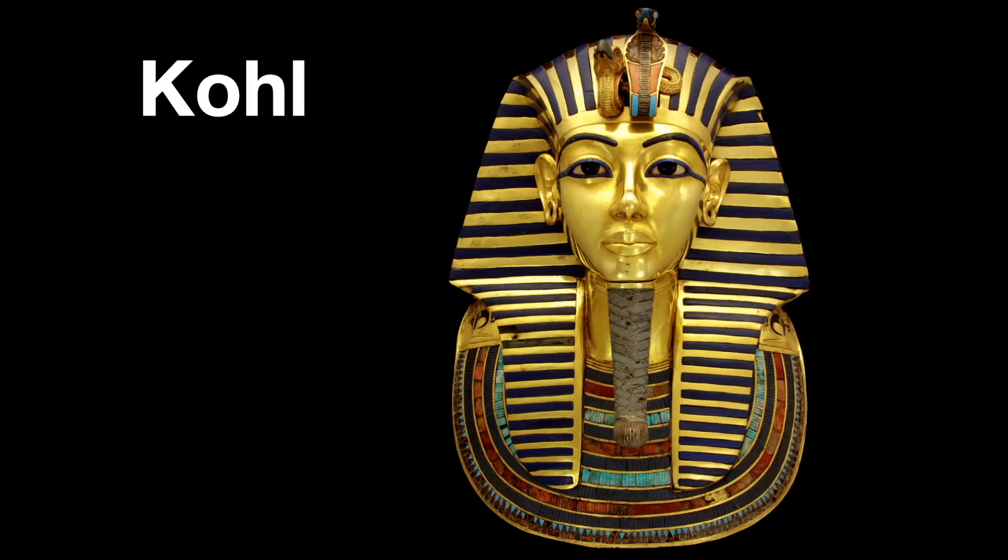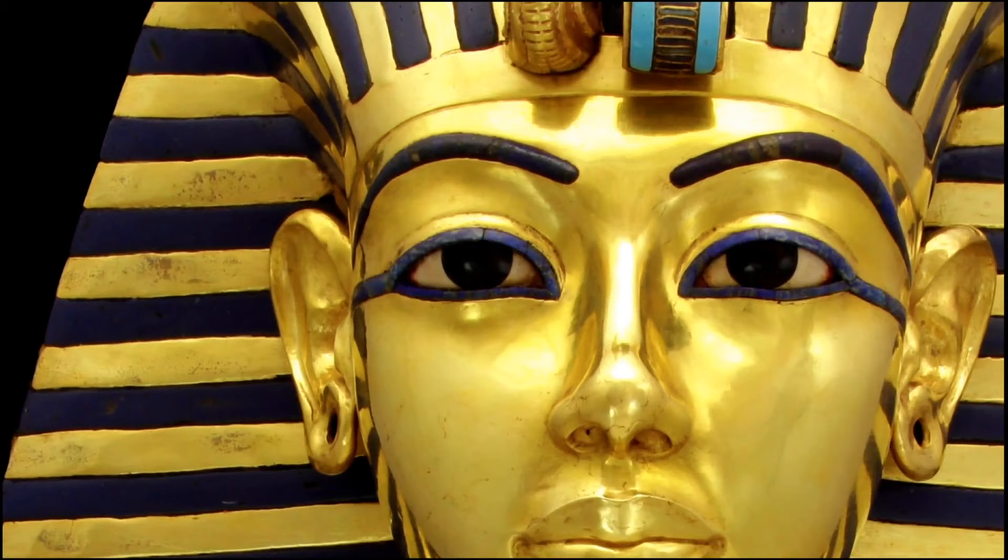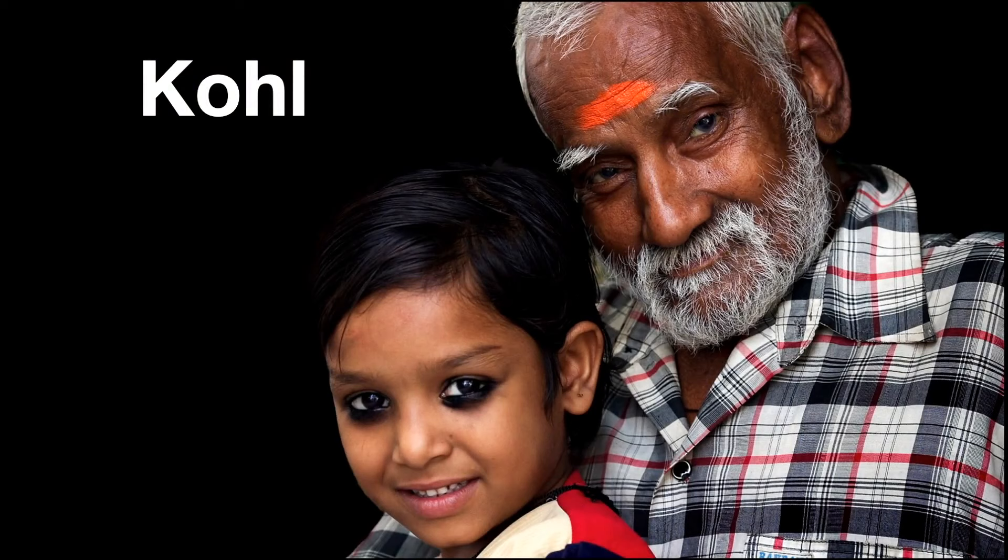What is certain is that antimony ore was ground into black eye makeup called coal, and that was used in ancient Egypt as seen in the famous mask of Tutankhamun. This ore, antimony sulfide, is mentioned in an Egyptian papyrus of the 16th century BCE. Coal is still used in Africa, the Middle East, and India, as seen here on the granddaughter of this Varanasi food cellar, and easily my favorite photo in this talk.